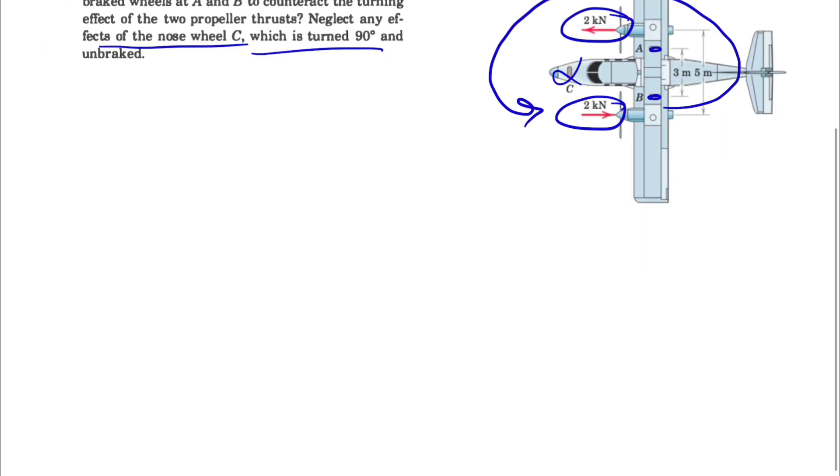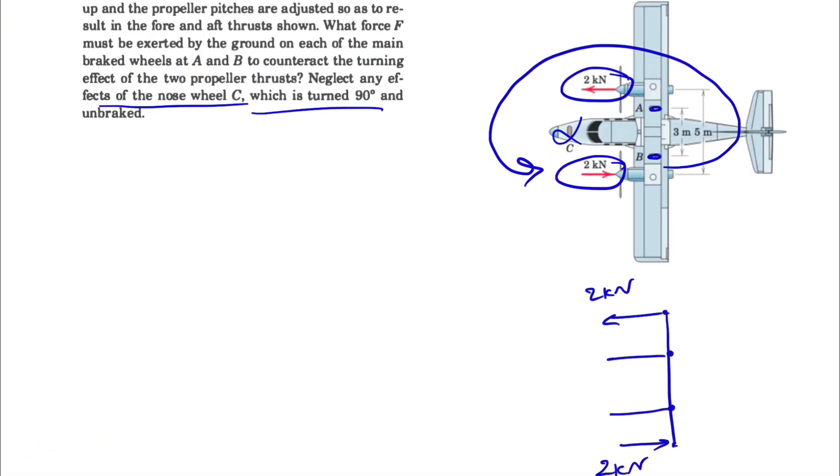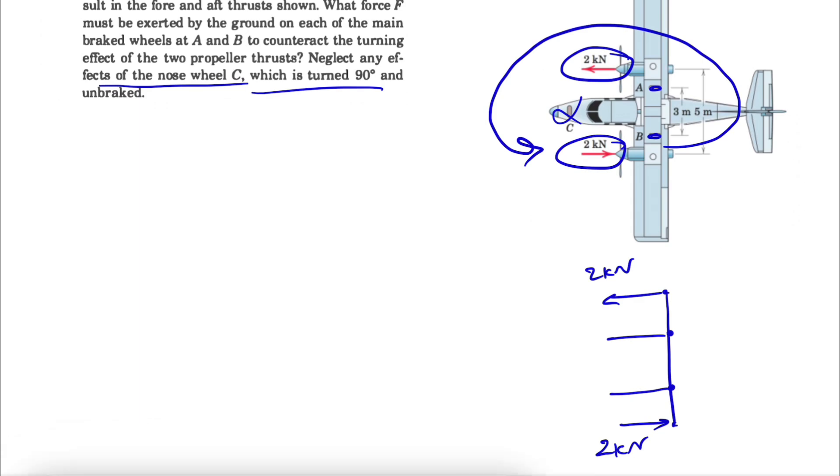I'm just going to draw the free body diagram in here. So we have these two forces of 2 kN here and there, and we have two points A and B. Let's call one of them F_A and the other one F_B. I'm not going to show any direction for now. We're going to figure out what's the direction.